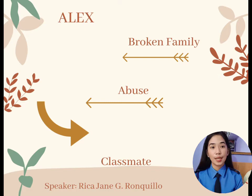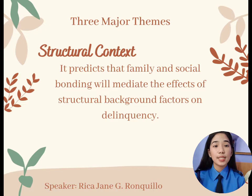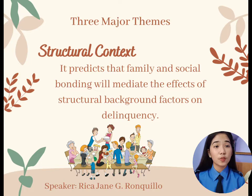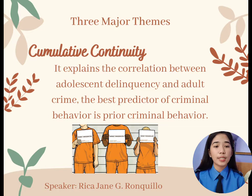Samson and Laub's age-graded theory of informal social control introduces three themes. First is structural context — it predicts that family and social bonding will mediate the effects of structural background on delinquency. Second is cumulative continuity — it explains the correlation between adolescent delinquency and adult crime. The best predictor of criminal behavior is prior criminal behavior.